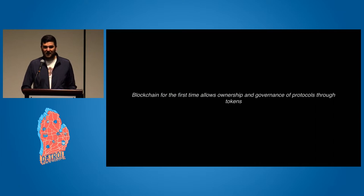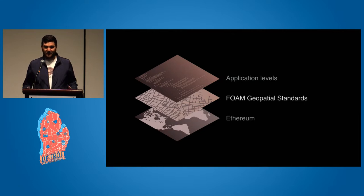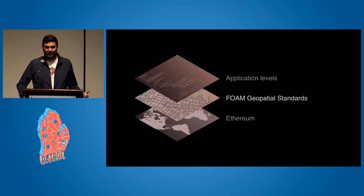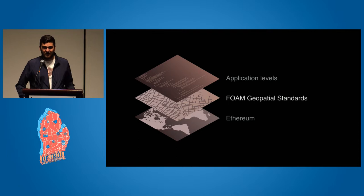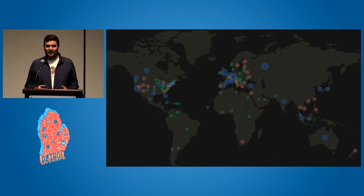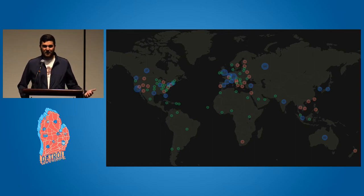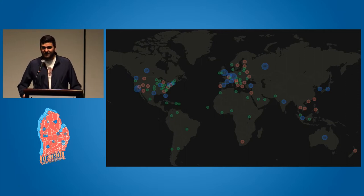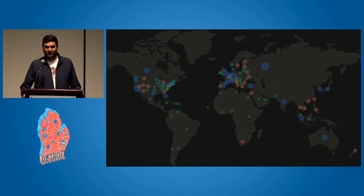That ownership happens through digital scarcity of something called tokens. You have a protocol backed by a token that allows ownership as well as governance rights — that's a brand new thing Bitcoin introduced. With the Foam protocol we have our own token to back the spatial entity. We're built on the Ethereum blockchain, which allows anyone to build programmable applications, and the Foam protocol works as a protocol in between, bringing spatial standards and tools. We had a token sale this summer where we distributed tokens to people who wanted to participate as cartographers in our system.